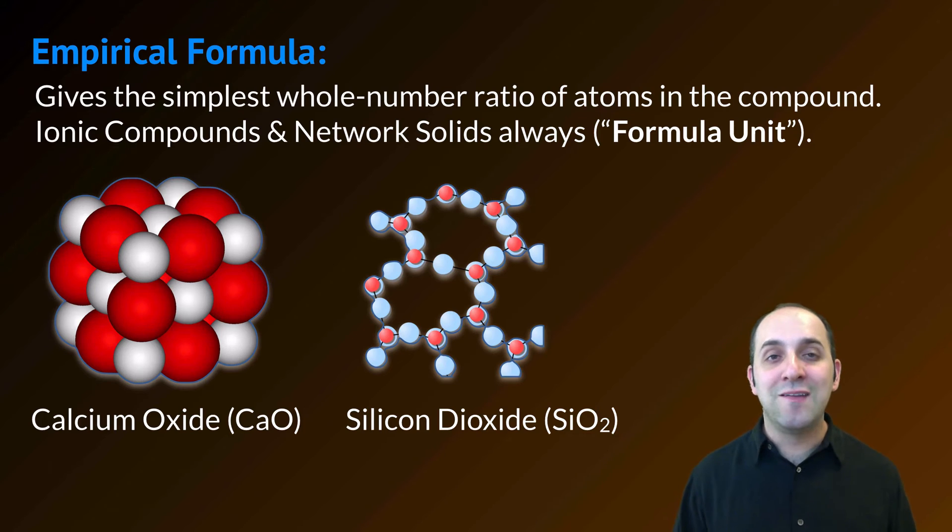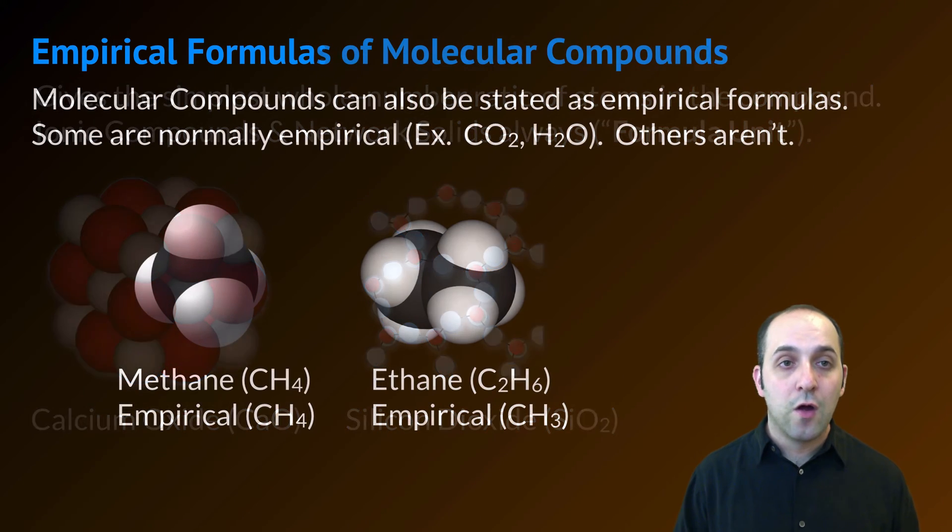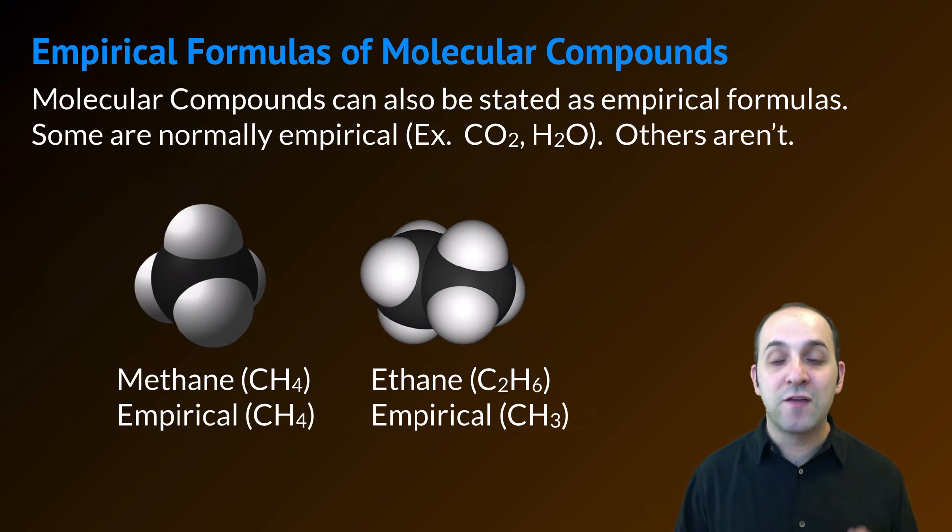Remember that the empirical formula is the simplest whole number ratio of atoms in a compound. This is always going to be true for ionic compounds and network solids, what we call the formula unit of the compound. Also remember that molecular compounds can be stated as empirical formulas, but they don't have to be. Some are normally empirical, others aren't. It really depends upon the particular compound.